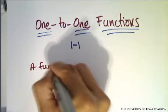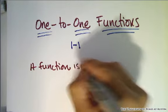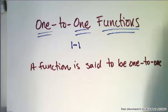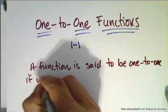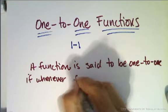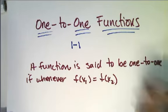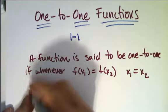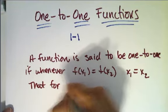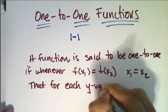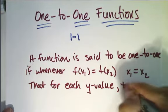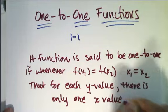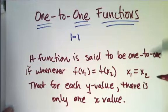A function is said to be one-to-one if, whenever f of x1 equals f of x2, then x1 is equal to x2. What that's really saying is that for each y-value, there is only one x-value.